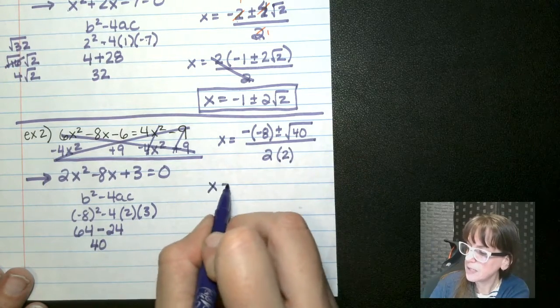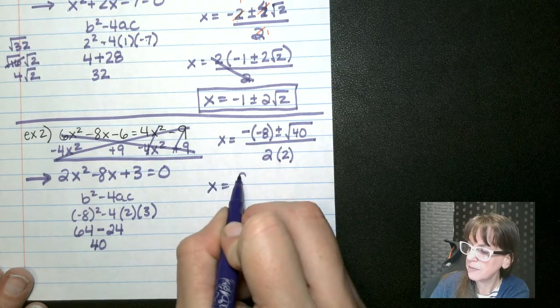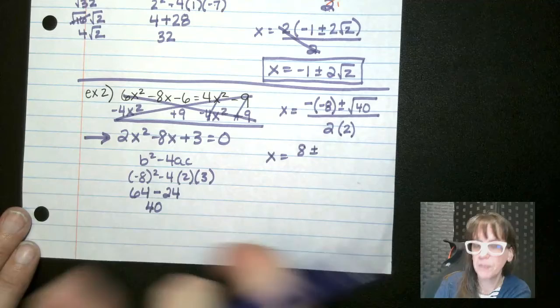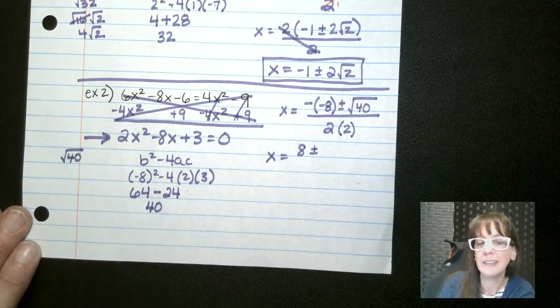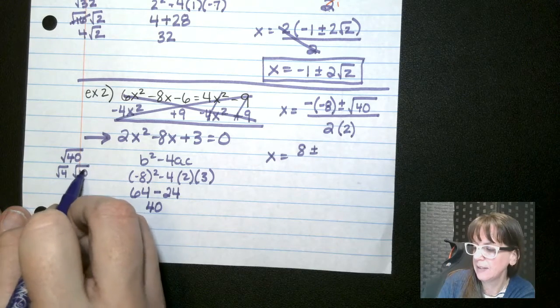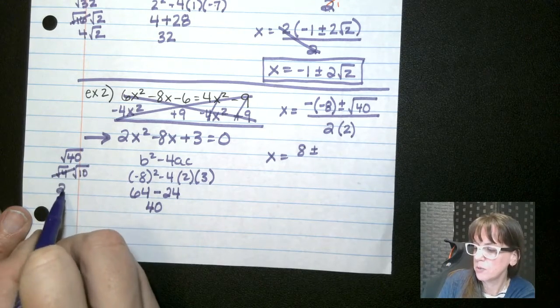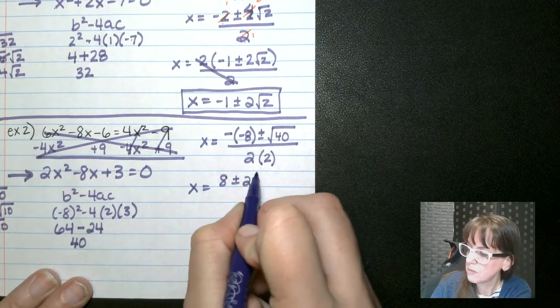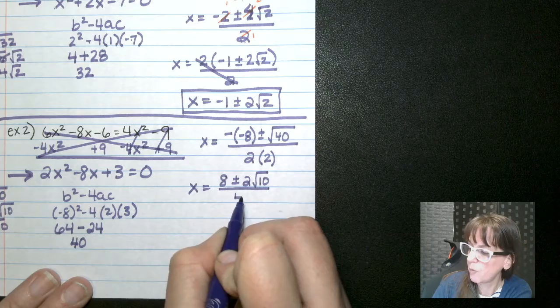Okay. So let's clean this up a little bit. We have x equals negative negative is a positive 8 plus minus. Now root 40. Let's do some side work here. Root 40. There is a perfect square hidden in there in that it's 4. Root 4 and root 10. The square root of 4 is 2. So 2 root 10. So 2 root 10. All of that is over 4.